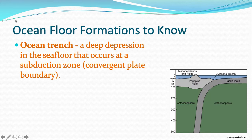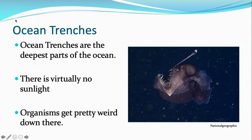An ocean trench is a deep depression in the seafloor that occurs at a subduction zone, and a subduction zone is a convergent plate boundary. We talked about the Mariana Trench in the plate tectonics unit — that's the deepest part of the ocean. It's a subduction zone where one plate is sliding beneath another plate, getting destroyed. Ocean trenches are the deepest parts of the ocean. There's virtually no sunlight, and there are some organisms that live down there, and they get pretty weird.